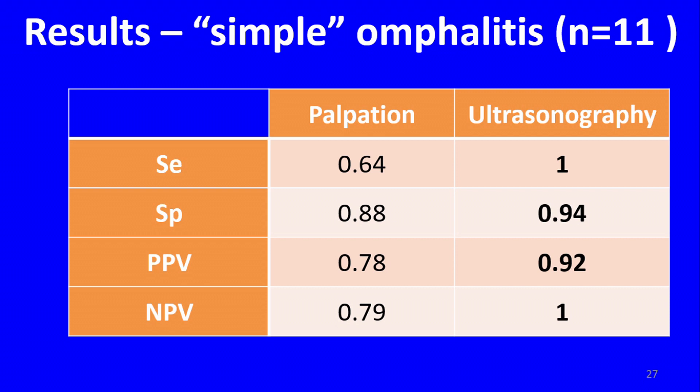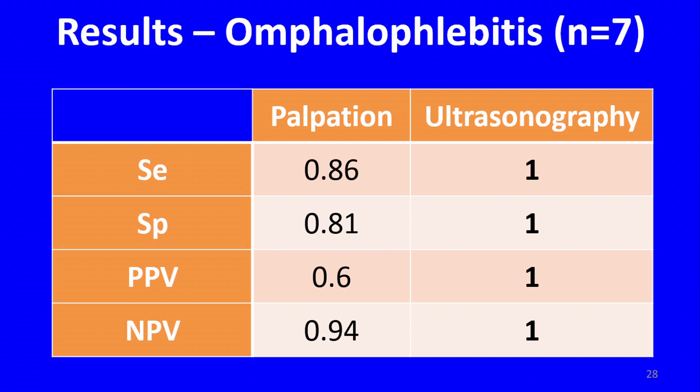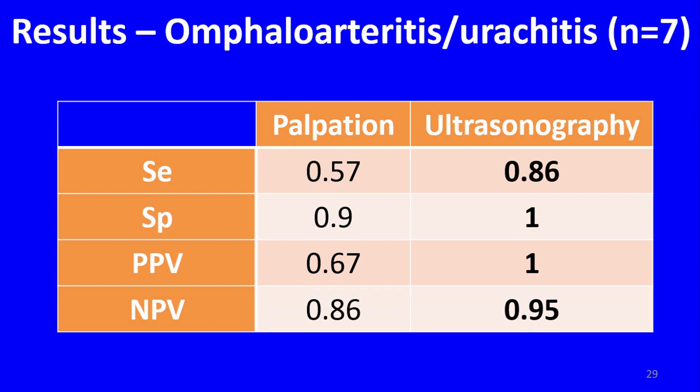What was more interesting for us were the results for internal umbilical disorders. In the case of simple omphalitis, ultrasonography allowed us to be quite perfect compared with palpation. In the case of omphalophlebitis — infection of the umbilical vein going to the liver — we had excellent results, with sensitivity, specificity, and positive and negative predictive values of one. In cases of omphalitis, arteritis, or urochitis, we had almost the same results.